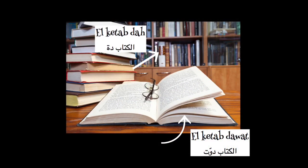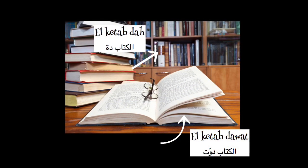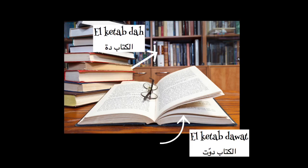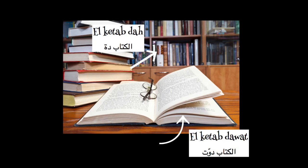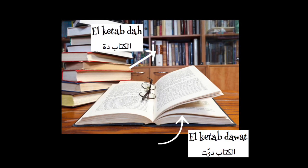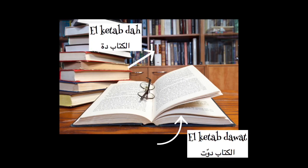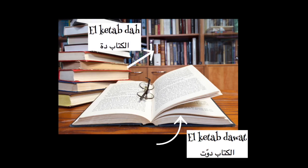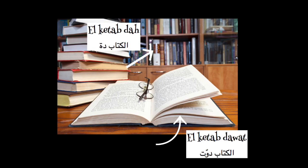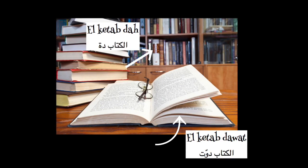In this picture, we have a book, which is 'Kitab'. And 'Il-Kitab' means 'the book'. Book is a male object. If I'm going to talk about a book that is near me, I'm going to say 'Il-Kitab Dawat'. But if the book is far away, I'm going to say 'Il-Kitab Da'. So 'Il-Kitab Dawat', 'Il-Kitab Da'.